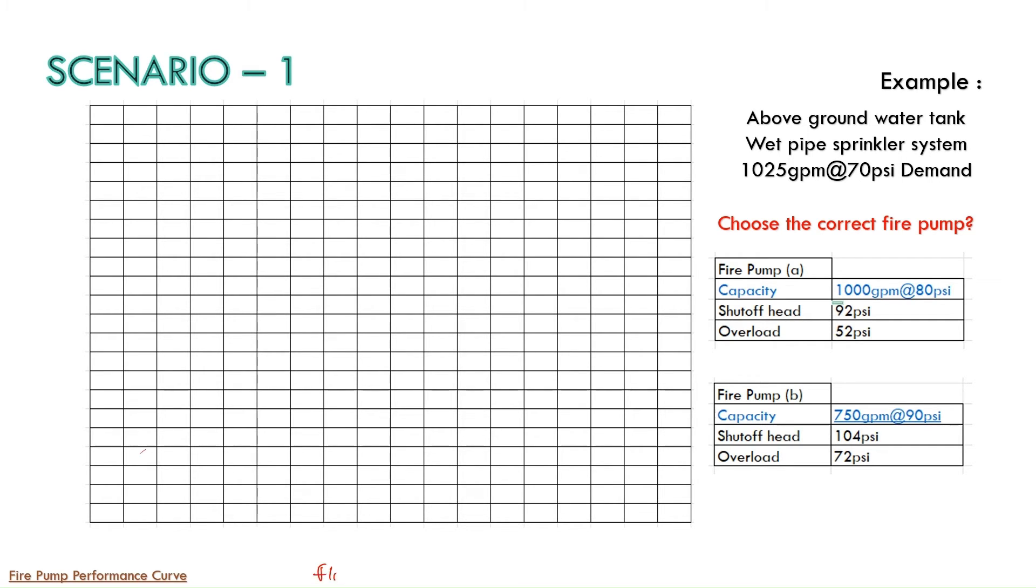You have the flow on x-axis in GPM and pressure in PSI on y-axis. So just we will put 0 GPM here, 200 GPM, 400, 600, 800, 1000 GPM, 1200 GPM, 1400 GPM, 1600 and 1800 GPM. On y-axis we can mention here 10 PSI, 20, 30, 40, 50 PSI, 60 PSI, 70 PSI, 80 PSI, 90 PSI, 100 PSI and here 110 PSI.